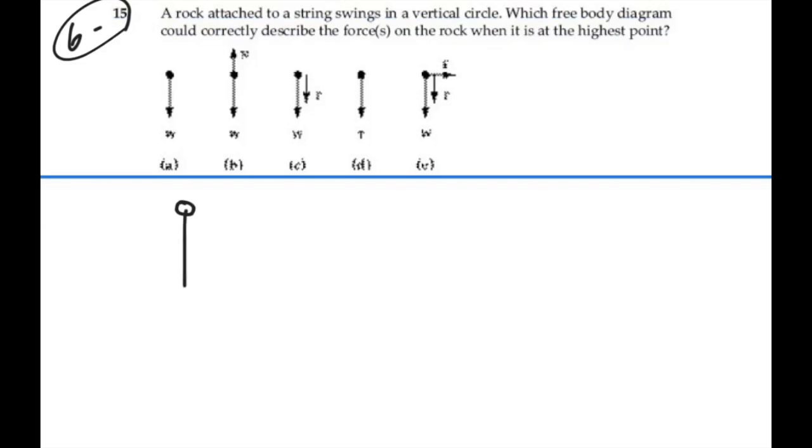So we have a rock on a string at its highest point moving around in a vertical circle like this. So there must be a net centripetal force towards the center of that circle in order for it to maintain that circular motion.